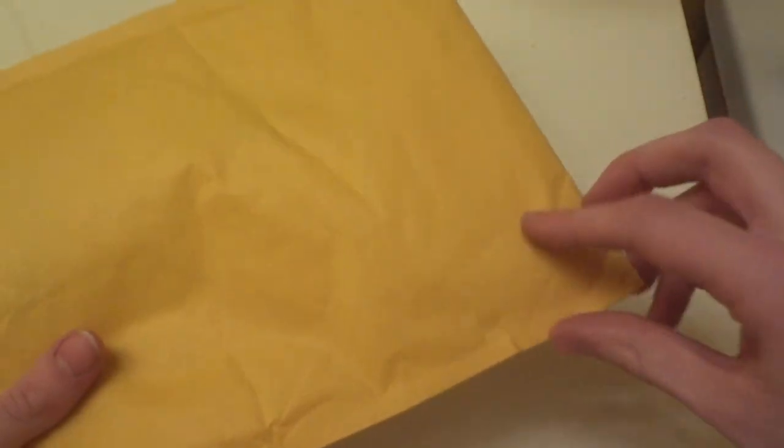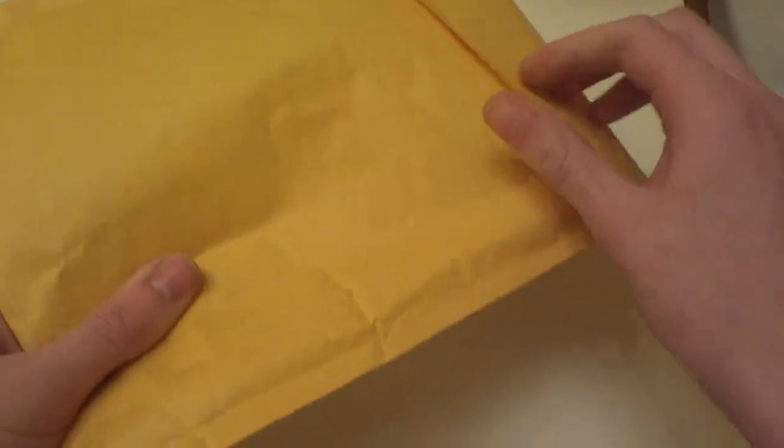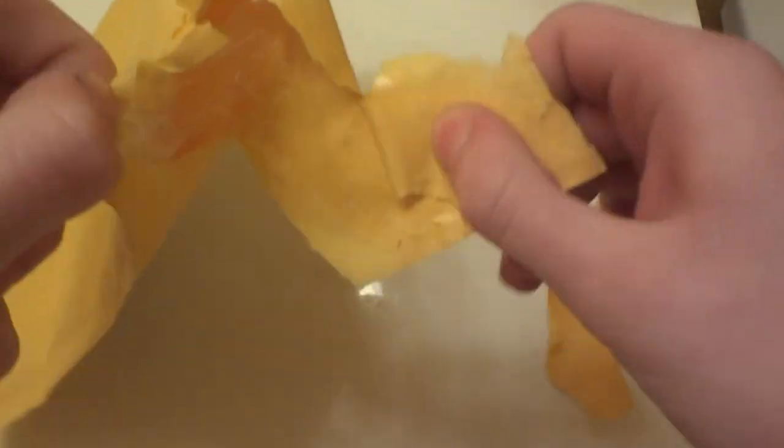I'm just going to open this. It's really like glued. It's just a yellow bubble mailer. I'm not very good at opening things. Okay there we go. This is what it looks like on the inside, just a little blue mailer.